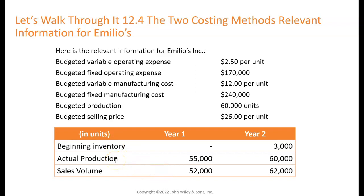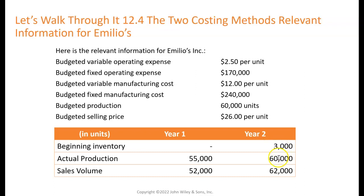Our assumptions: we start with zero beginning inventory, produce 55,000 units, then sell 52,000, so we'll have 3,000 in ending inventory. That's our beginning inventory next year. We produce 60,000 and sell 62,000 — we sell everything we make plus some. We use our beginning inventory and then 59,000 of the actual production from this year, under a FIFO assumption.